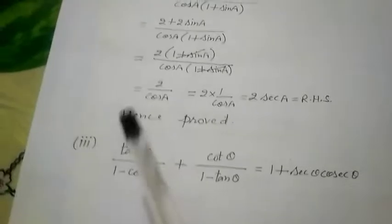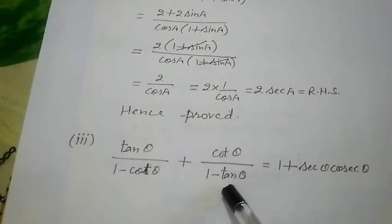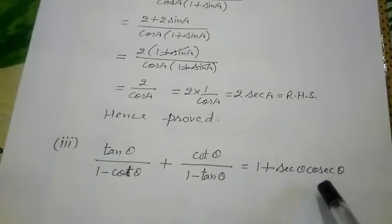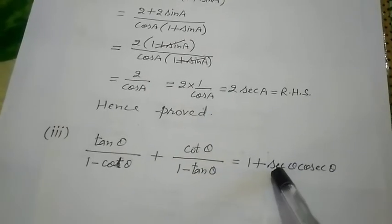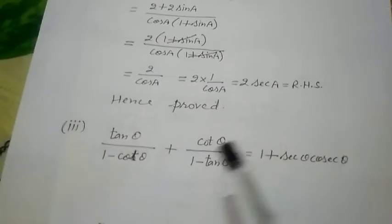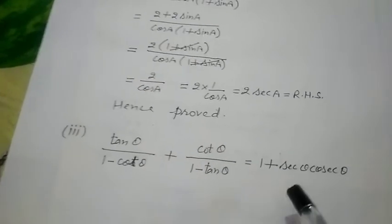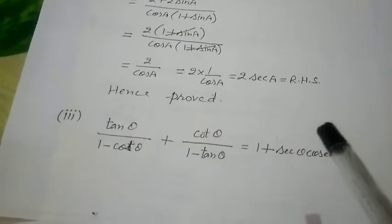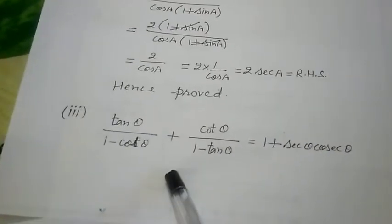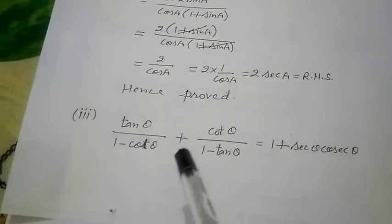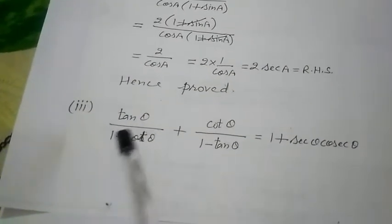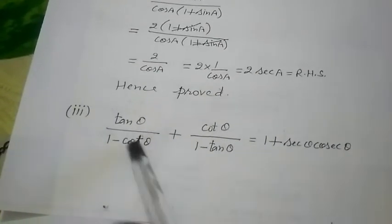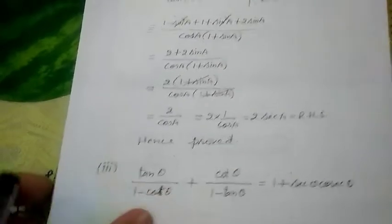For part 3: tan θ/(1 − cot θ) + cot θ/(1 − tan θ) = 1 + sec θ · cosec θ. The right side — secant and cosecant can be converted to sin/cos, but it is simple with only one term. In some questions we must solve both sides and show they are equal. The typical/complex side is taken first and simplified. Here the LHS has two fraction terms, so we take LCM and begin.